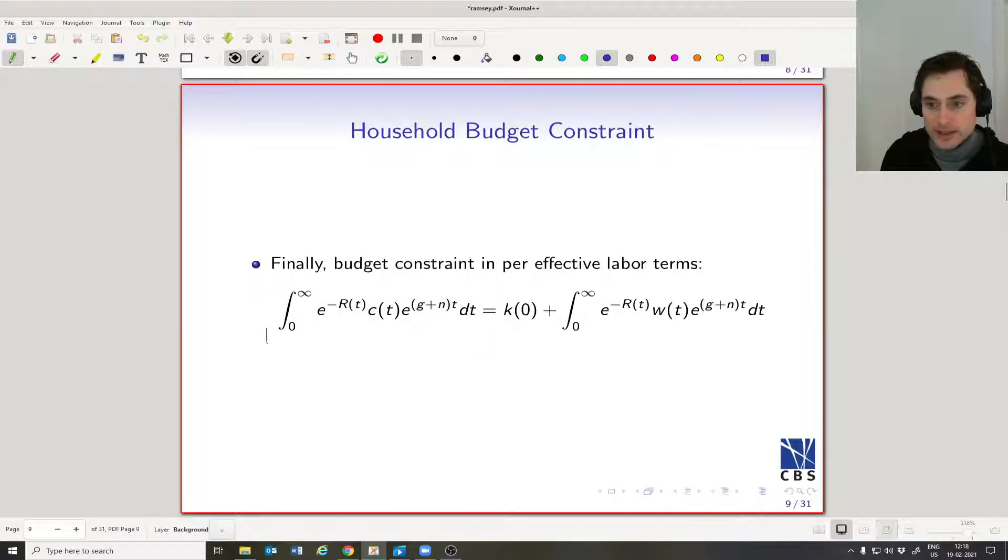So here's the budget constraint in per effective labor terms. So you can see that it's similar to—we can just say it. So it's the discounted consumption of the household is equal to the discounted income of the household plus initial holdings of wealth here, all in per unit of human capital terms. But this is the same as the budget constraint we wrote on the last slide.